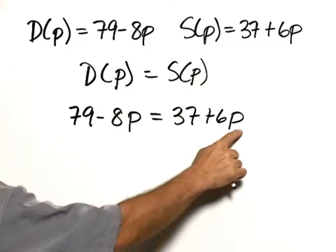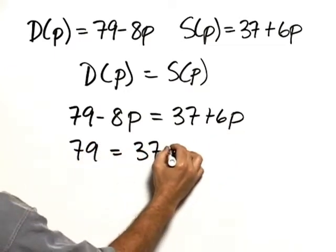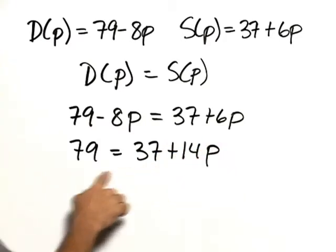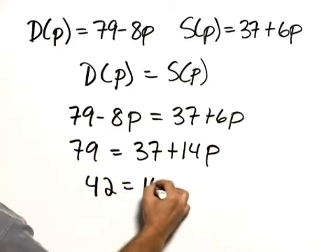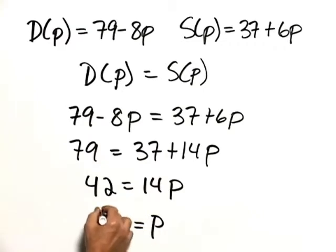Let's add 8p to both sides. 79 is equal to 37 plus 14p. And subtract 37 from both sides, so 42 is equal to 14p. Then divide both sides by 14, and you find that p, which remember represents the price, would be $3.